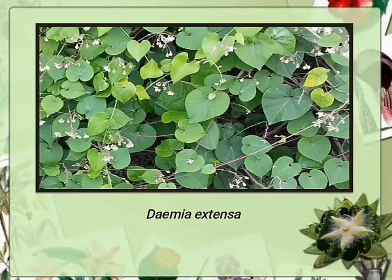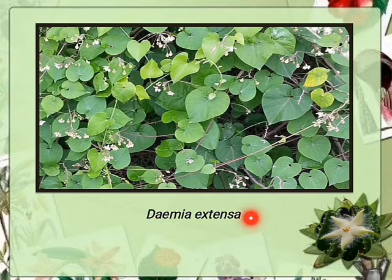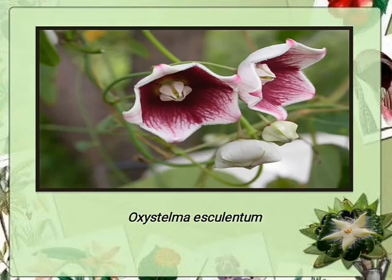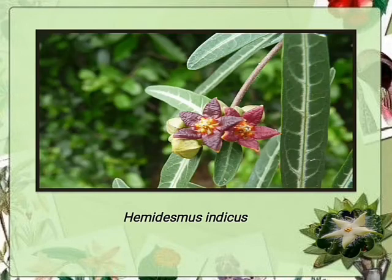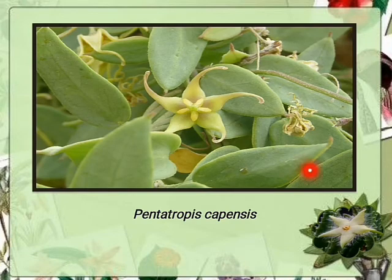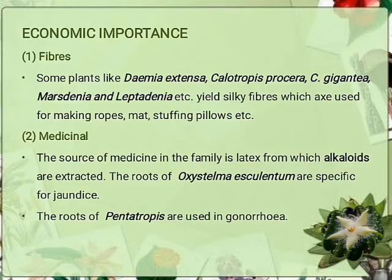Some common plants of Asclepiadaceae: Demia extensa (in Gujarati, 'chamar dudli'), Oxystelma esculentum, Hemidesmus indicus, and Pentatropis capensis. These are all common plants of family Asclepiadaceae.